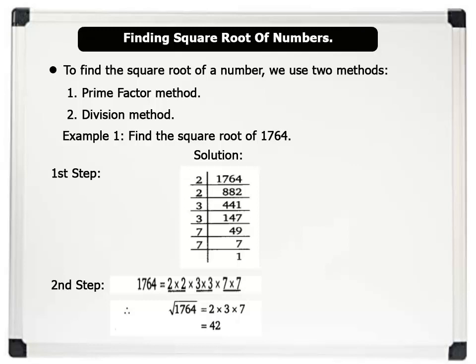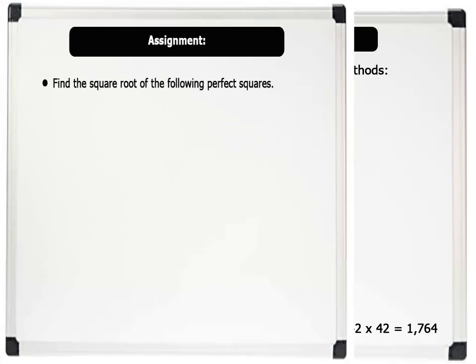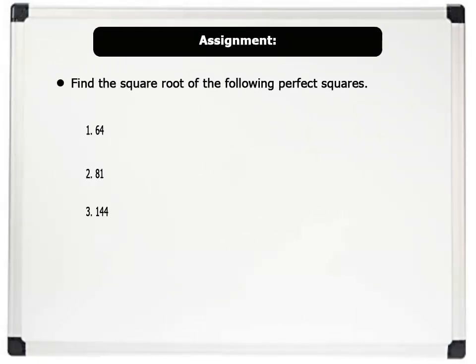That's brilliant. Note that you can always cross check your answer by multiplying 42 by itself to get the original number. Now, pause this video, write these numbers in your notebook, and find the square roots of these perfect squares.